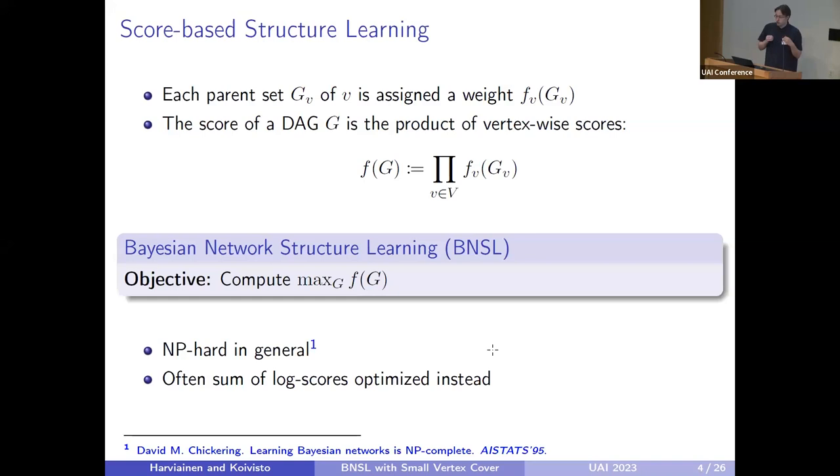We are taking the score-based approach on structural learning of Bayesian networks. This means that for each vertex of the DAG, we have a score function that assigns a score to each possible parent set of that vertex. The score of a DAG is simply the product over all these vertices of the local scores. The goal of Bayesian network structural learning problem is to find a DAG that maximizes this score. As most of you probably know, this problem is NP-hard in general.